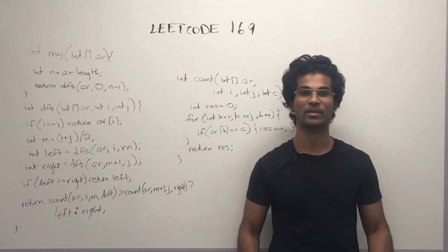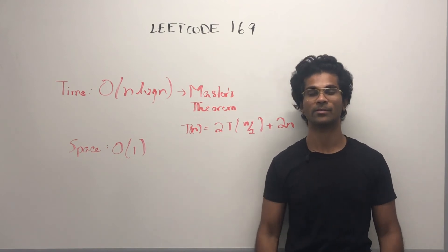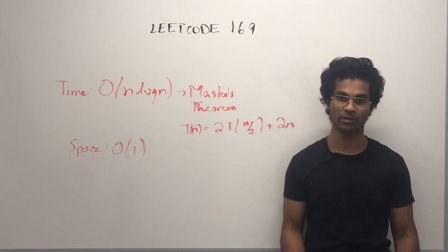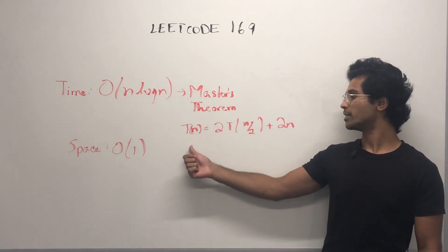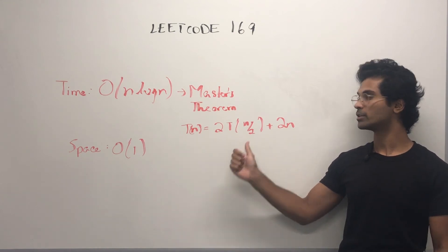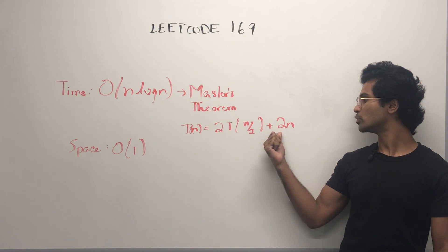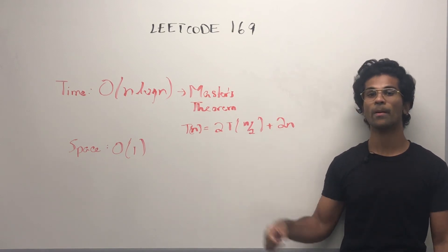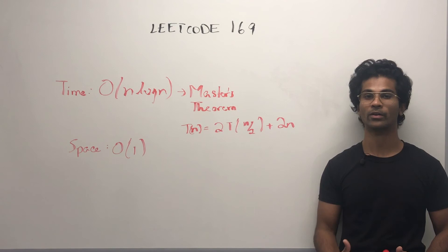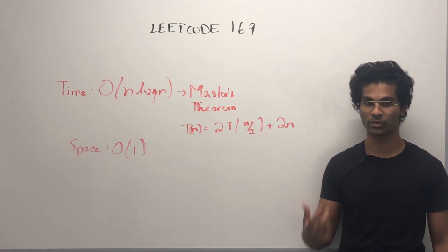Now, let's look at the time and space complexity. The time complexity is going to be n log n derived from Master's theorem. For t of n, we have two times t of n by two because we're splitting the array in halves and recursively calling, plus two of n times two because we might potentially have to calculate iteratively which count is greater.